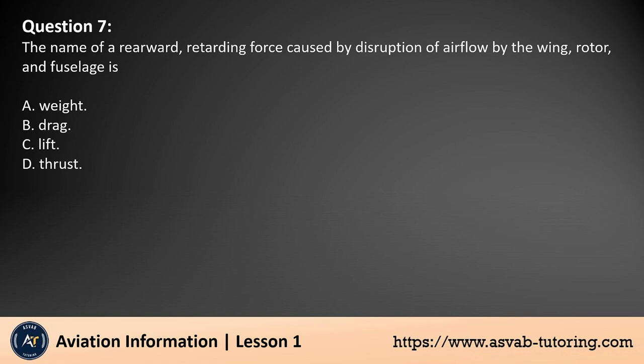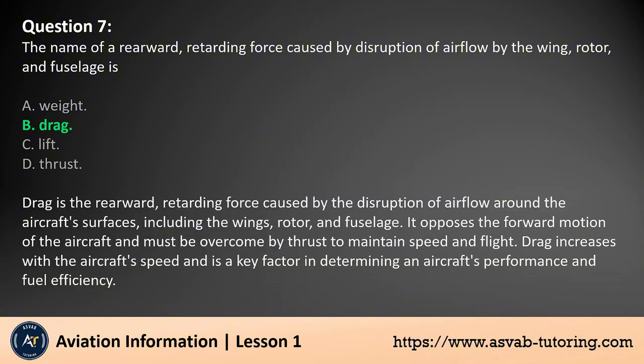Question 7. The name of a rearward, retarding force caused by disruption of airflow by the wing, rotor, and fuselage is: A. Weight. The answer is B. Drag is the rearward, retarding force caused by the disruption of airflow around the aircraft's surfaces, including the wings, rotor, and fuselage. It opposes the forward motion of the aircraft and must be overcome by thrust to maintain speed and flight. Drag increases with the aircraft's speed and is a key factor in determining an aircraft's performance and fuel efficiency.